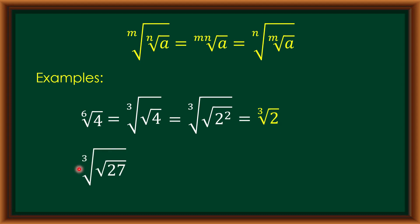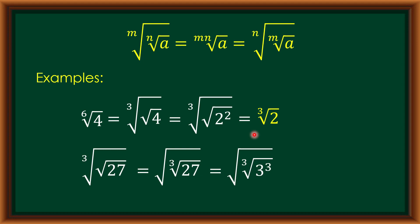Next example: we have the cube root of the square root of 27. Since 27 is not a perfect square, we use our law to rewrite this as the square root of the cube root of 27. Because 27 is a perfect cube, we have the square root of the cube root of 3 cubed, where 3 cubed equals 27. Simplifying, the answer is the square root of 3.